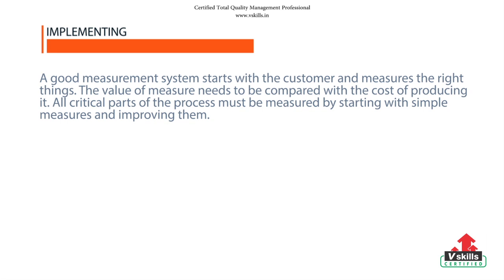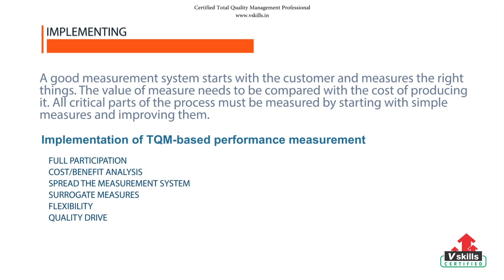Now let us elaborate the steps for implementation of TQM-based performance measurement. First step is to ensure full participation during the introductory period and allow the system to mold through participation. Second step is to carry out cost-benefit analysis on data generation and ensure measures that have high leverage are selected. Third step is to make the effort to spread the measurement system as widely as possible, since effective decision making will be based on measures from all areas of the business operation.